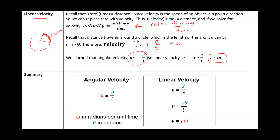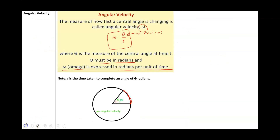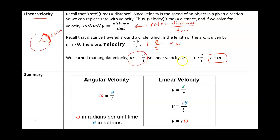Two formulas you must know: omega, the angular velocity, equals theta over time where theta is in radians; and linear velocity equals r times theta over time, which equals r times omega. In both cases, theta is always in radians. Here is a summary: omega is theta over time; velocity is s over time, which equals r theta over time, the same as r times the angular velocity.